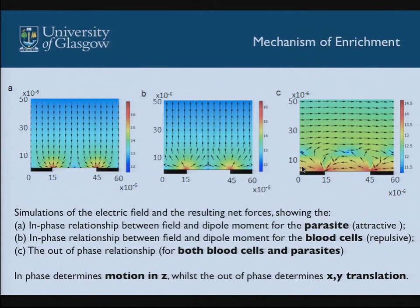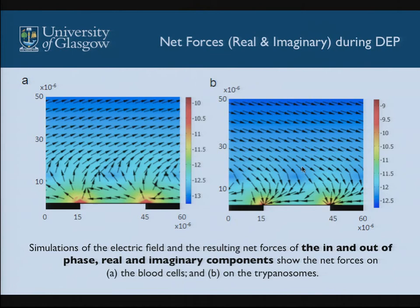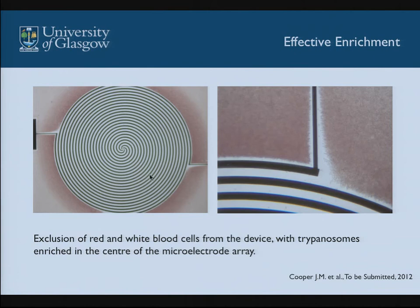Combining all forces, we set up a simple spiral electrode system applying AC field 90 degrees out of phase to four electrodes, creating a traveling wave across the surface. Blood immediately streams outwards, and after about five minutes the trypanosomes become focused in the center of the device, with red blood cells excluded to the outside. This device, which we're hoping to take to Kenya later this year through the Gates Foundation, separates trypanosomes from blood effectively.